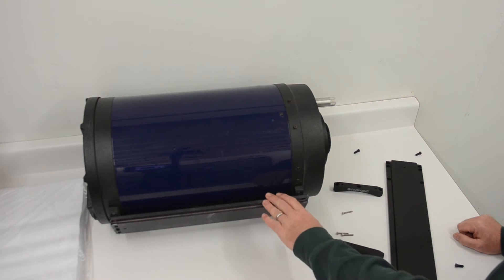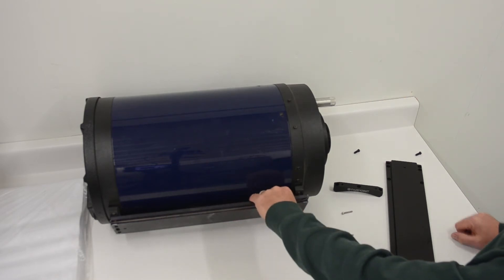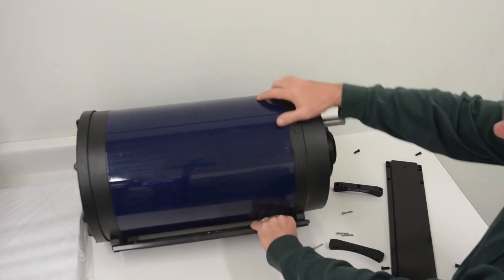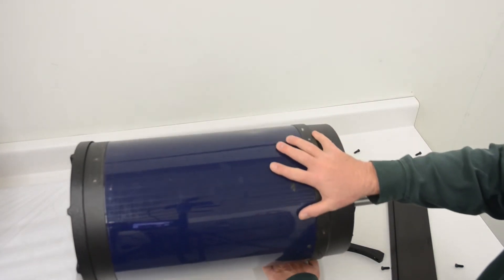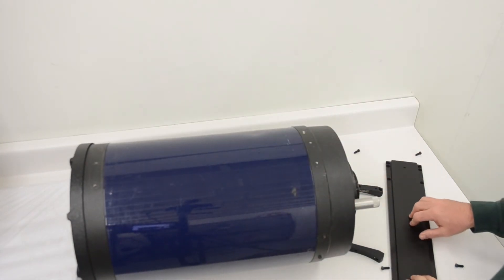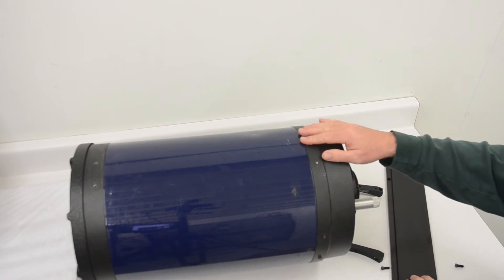Notice that this Meade 10 inch already has a dovetail on the bottom and that's what we would use to attach it to the mount. I'm going to install this additional dovetail to the top so we can mount some accessories on the top.